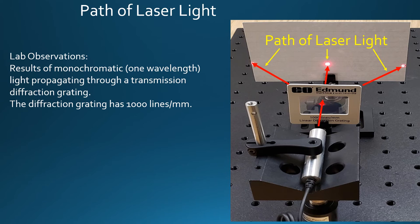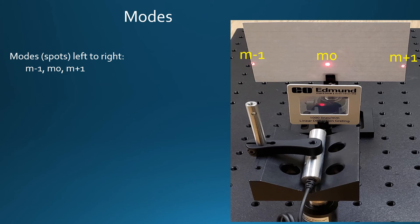In this picture, the red arrows indicate the path of red monochromatic laser light as it travels from the laser through the diffraction grating on its way to the target. The modes M-1, M0, and M+1 are the points of contact of the laser light on the target.